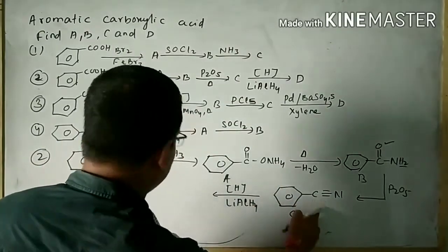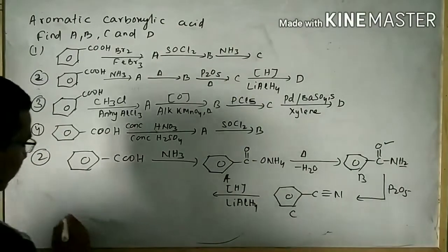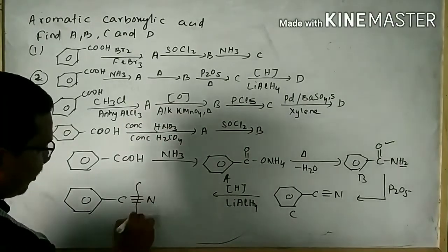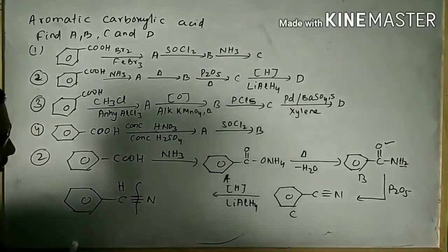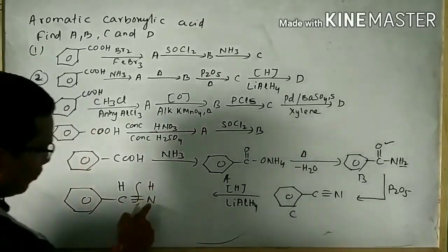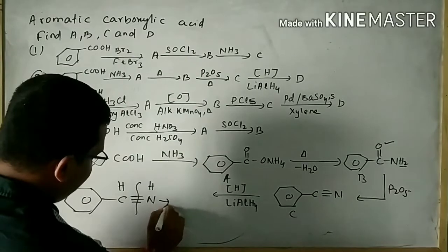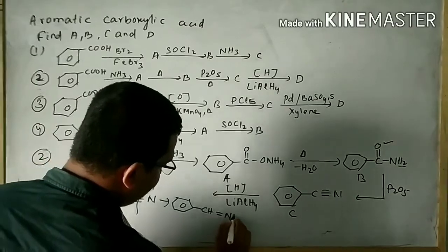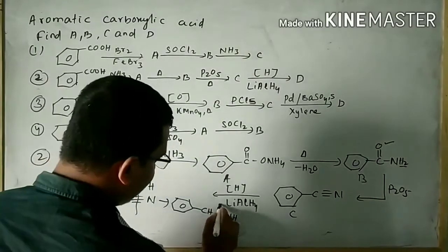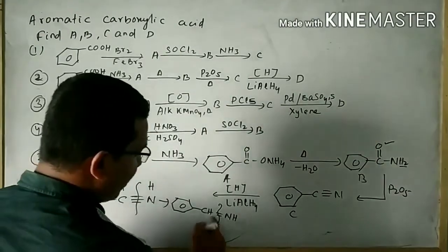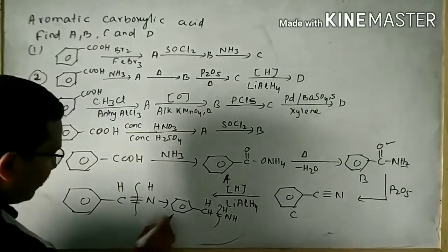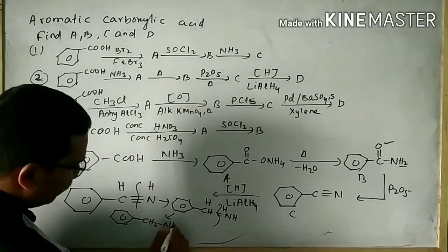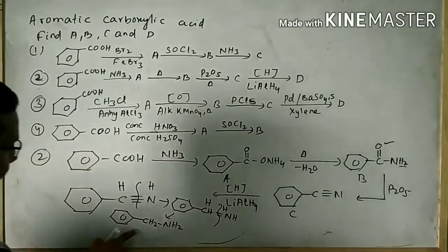Now the product C is subjected to reduction. This is your cyano group. I will break a pi bond here and give one hydrogen to the nitrogen atom. That means the product is C double bond NH — it is unstable. Again it undergoes reduction, breaking another pi bond, adding H, H. That means we can write CH2NH2, and that is your product D.